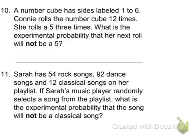Let's look at numbers 10 and 11 on the study guide. A number cube has sides labeled 1 to 6. Connie rolls the number cube 12 times and rolls a 5 three times. What is the experimental probability that her next roll will not be a 5?